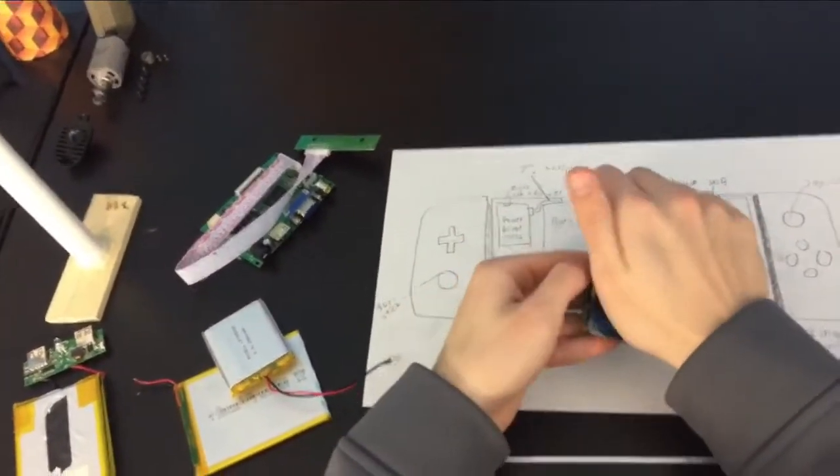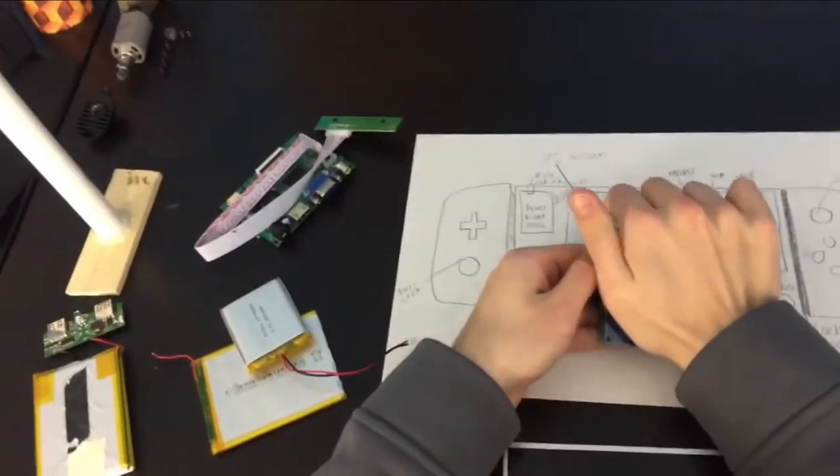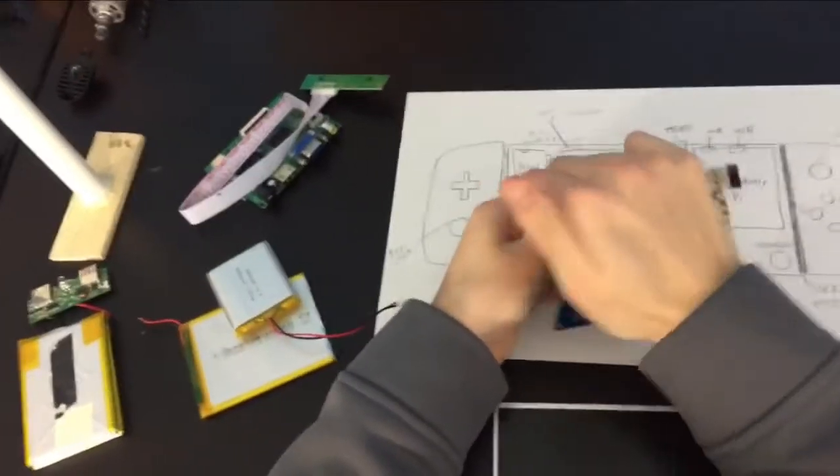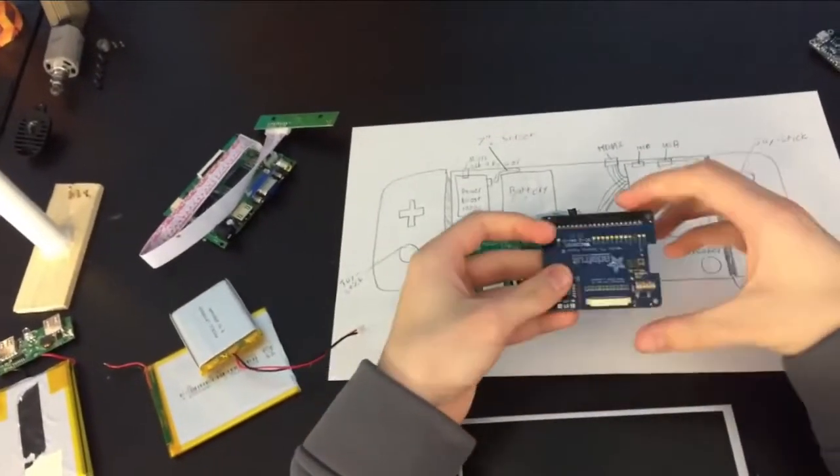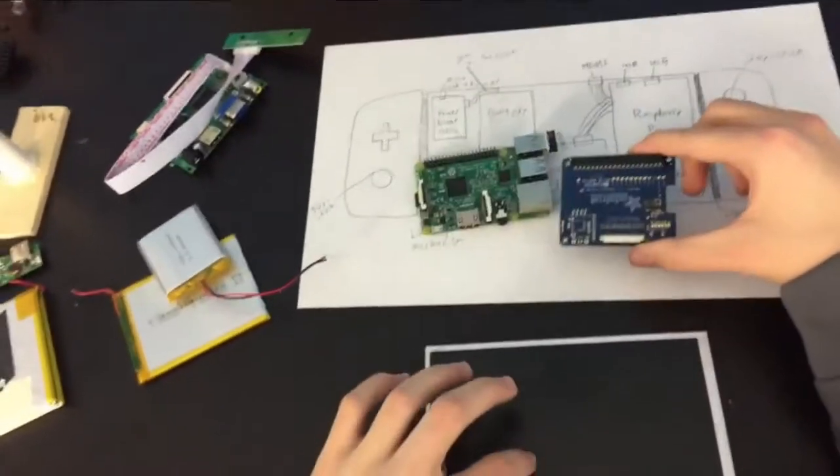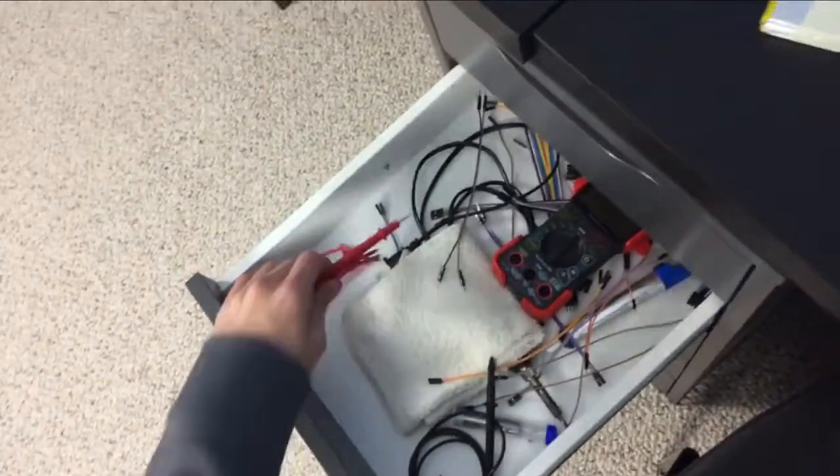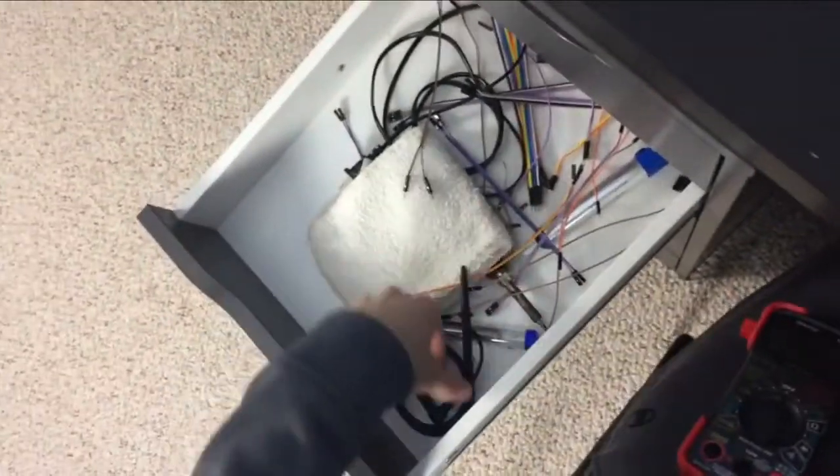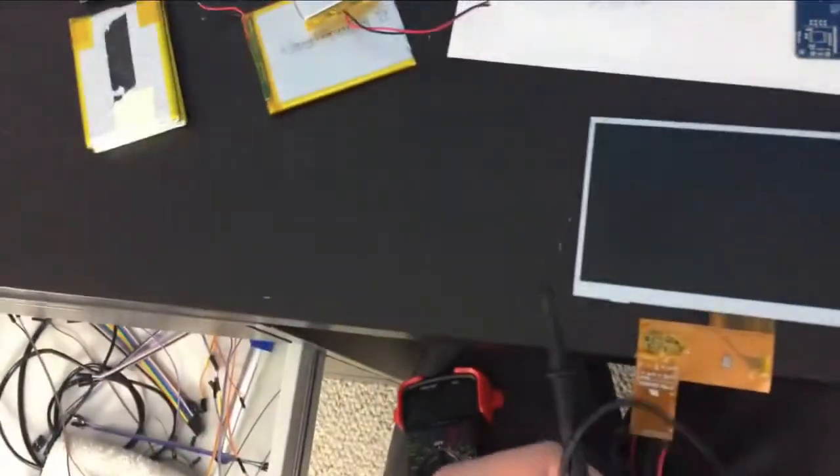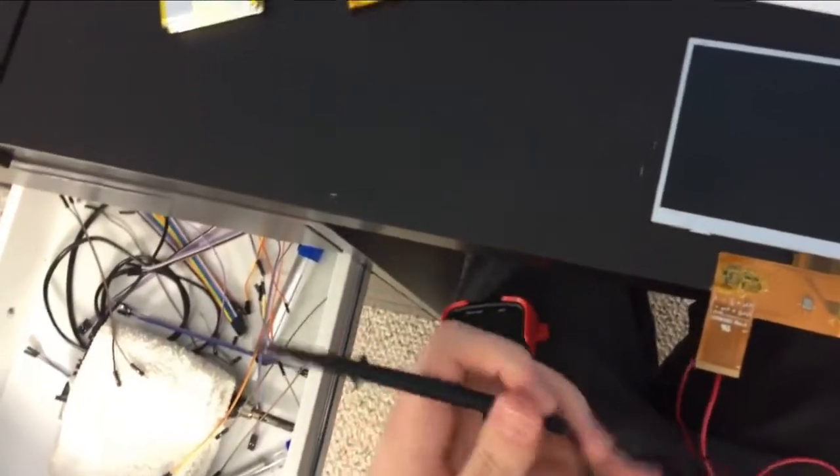But the problem right now is I'm not sure if one of these is fried, either the Kippa or the screen. So I'm not sure so I'm going to figure that out right now. That's the main problem I need to fix like pretty soon is figuring out a screen thing I can use because that's like the major thing of the build.